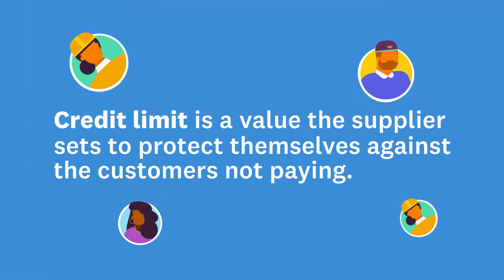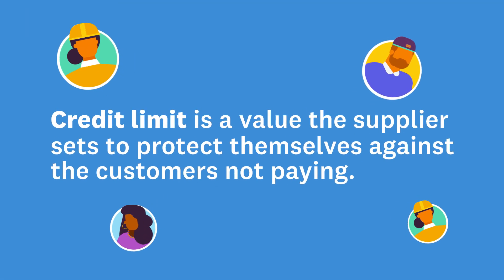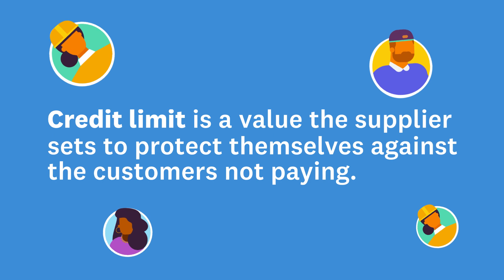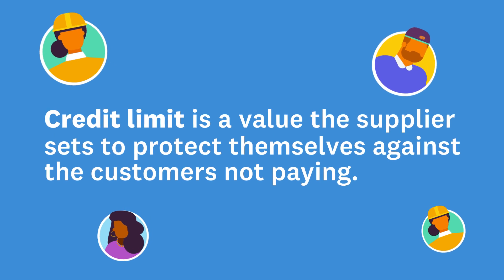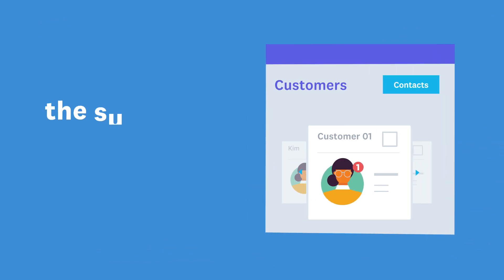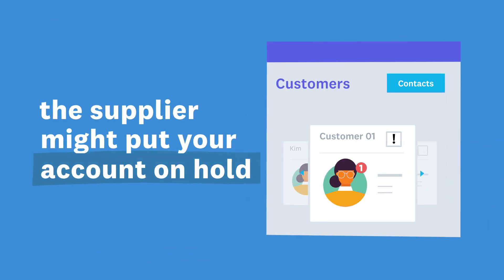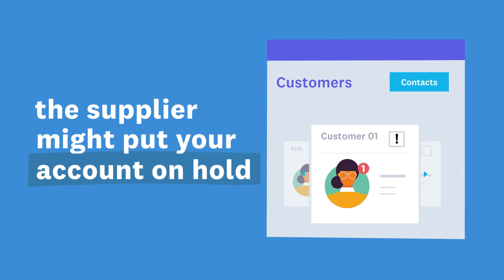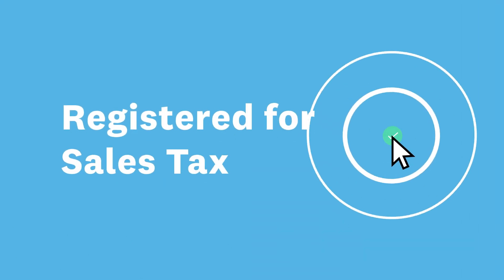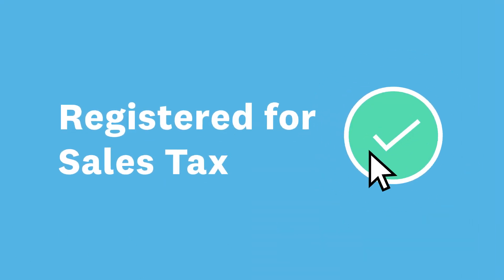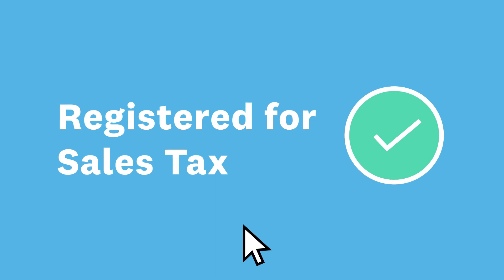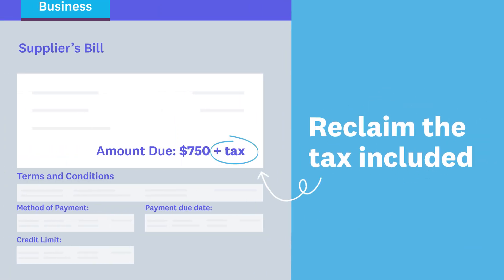This is a value the supplier sets to protect themselves against customers not paying. If you reach this limit, the supplier might put your account on hold until you've paid your outstanding bills. If you're registered for sales tax, a bill is especially important, as you might be able to reclaim the tax included, depending on what you've bought.